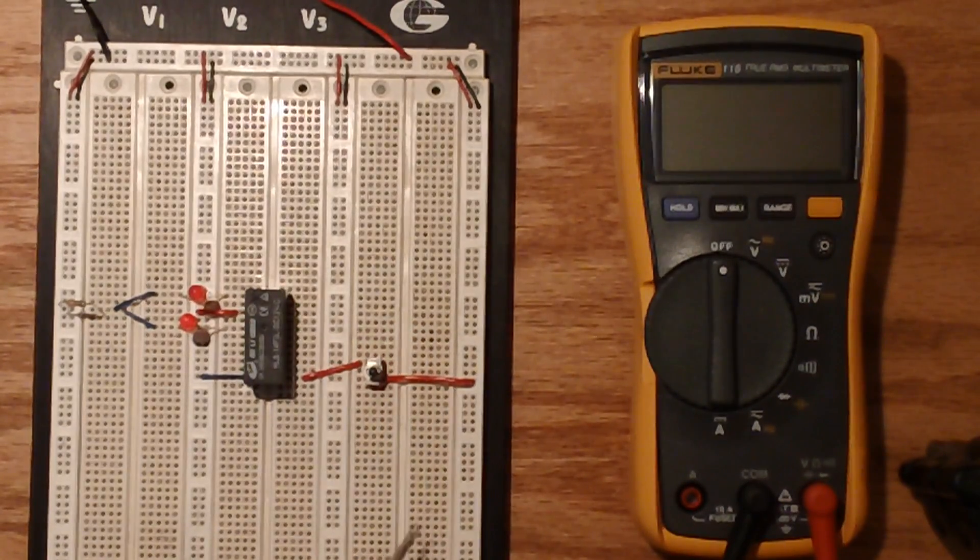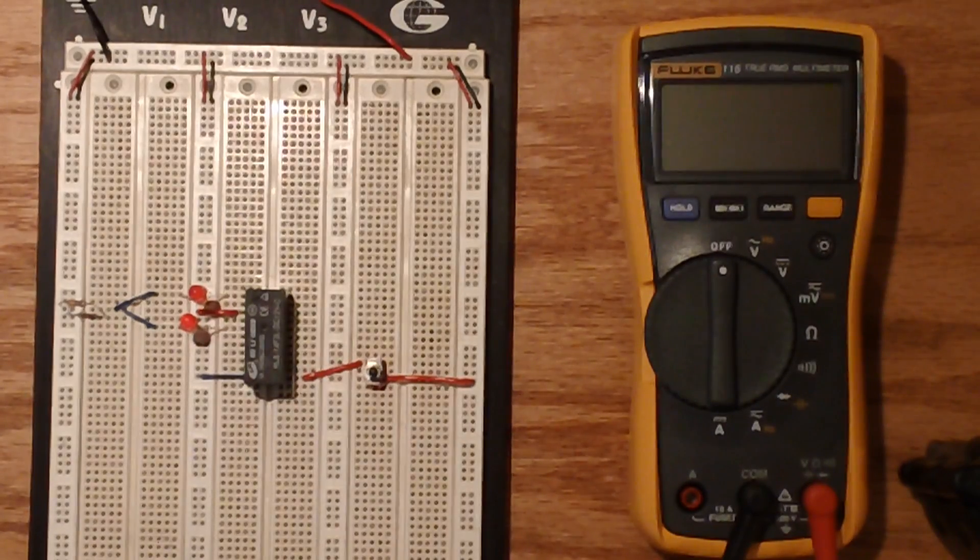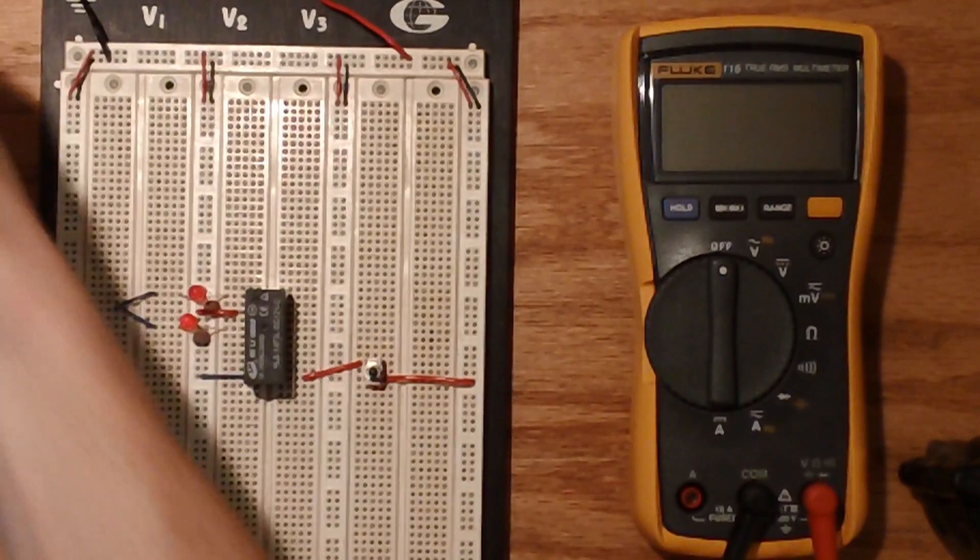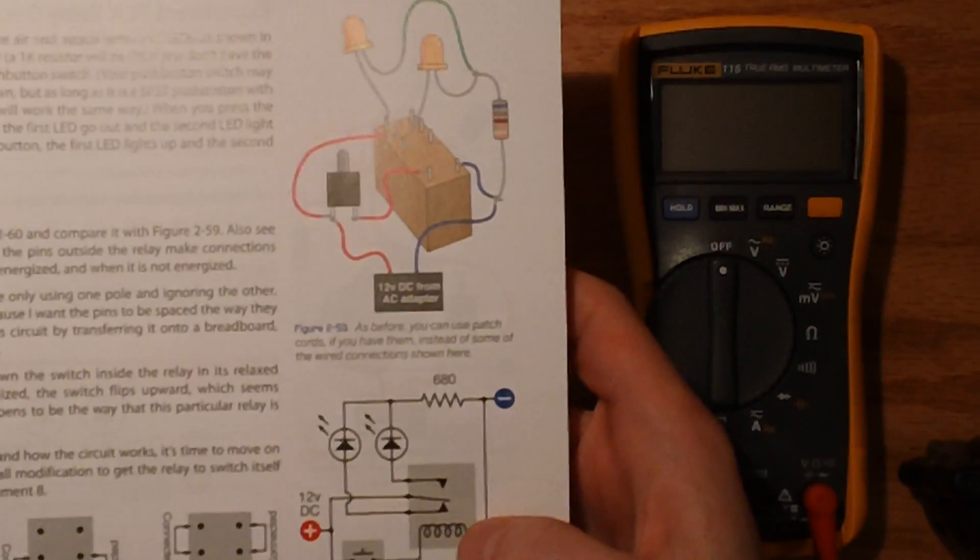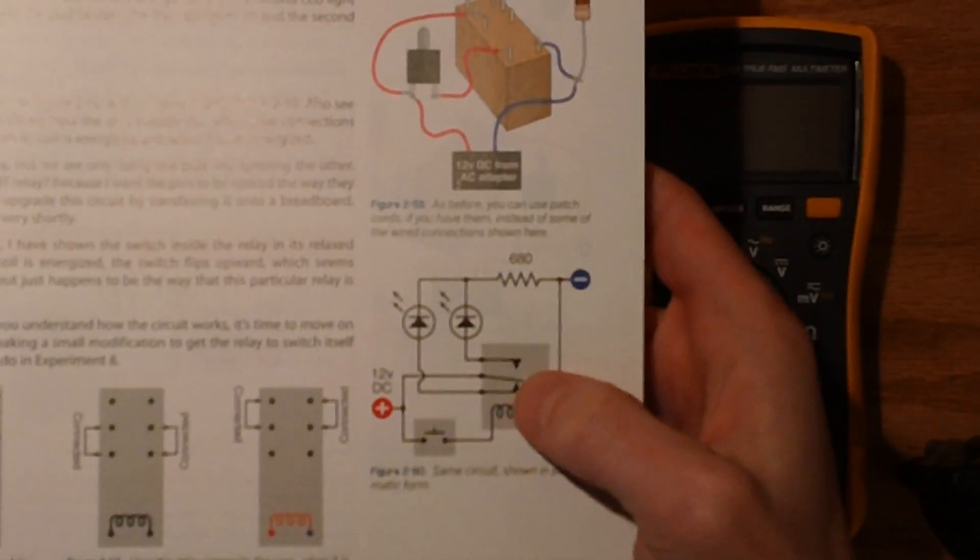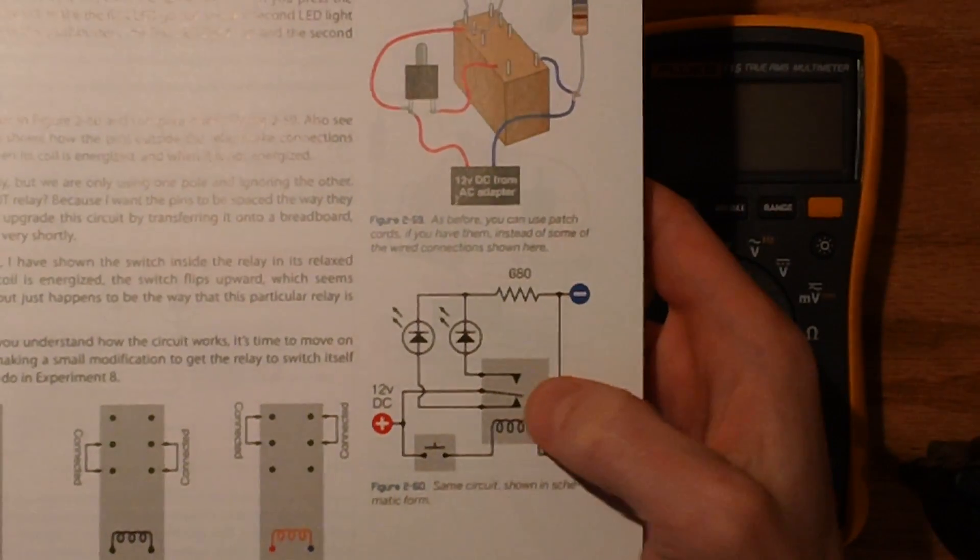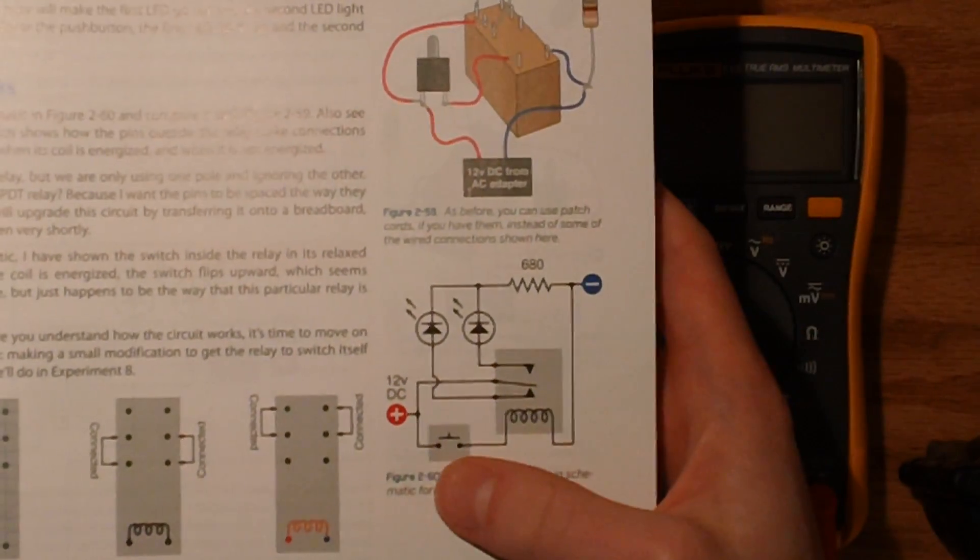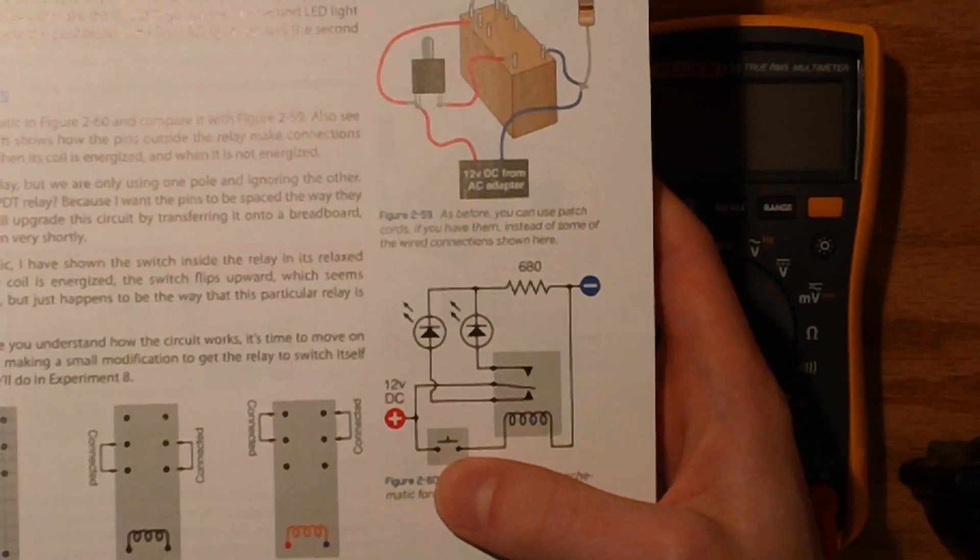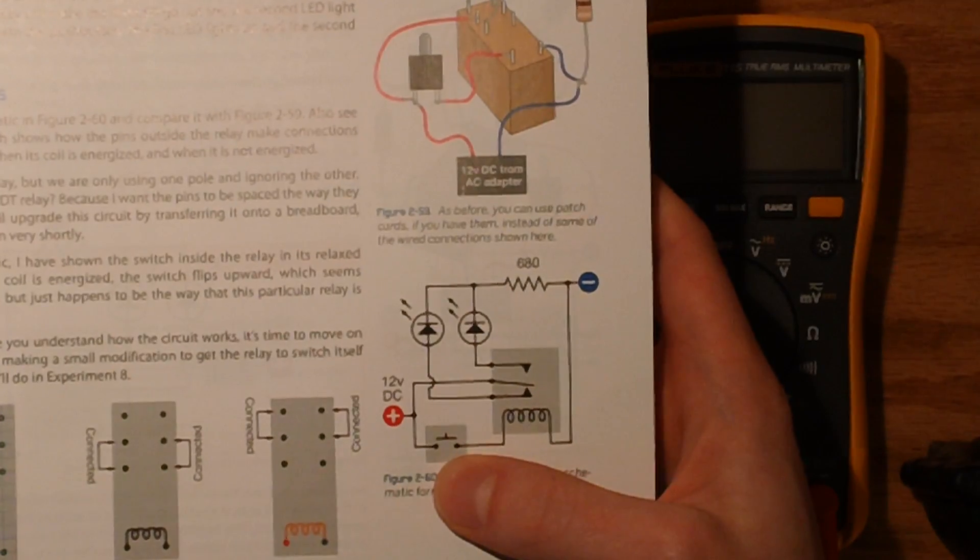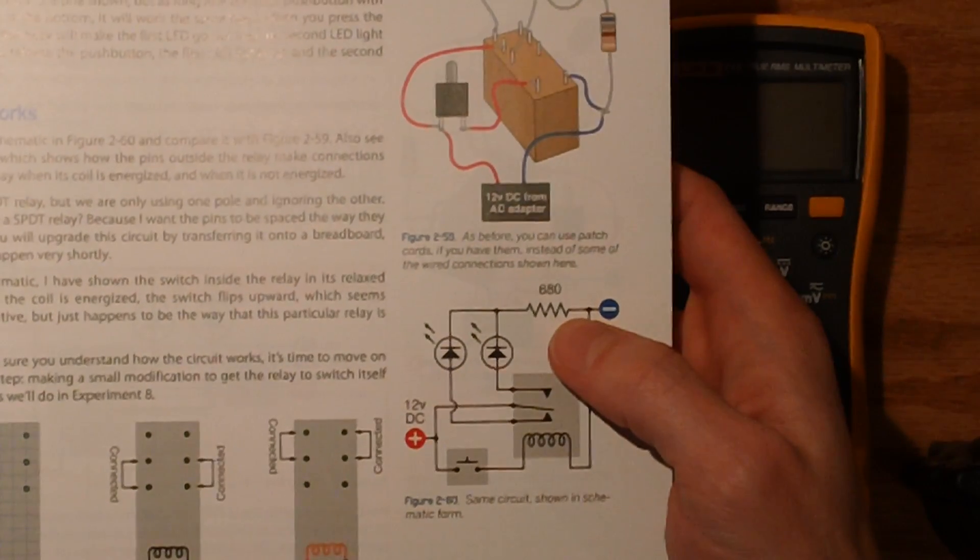Just to kind of also highlight the more accurate schematic here, so if we were to look at this, you've got the relay here and the switch here. Okay, and we got our two LEDs and our resistor.